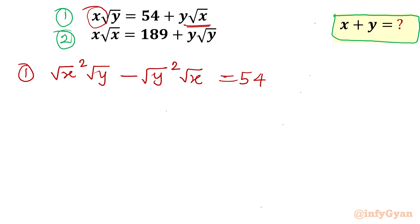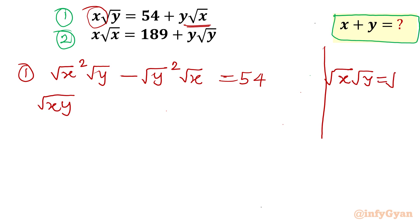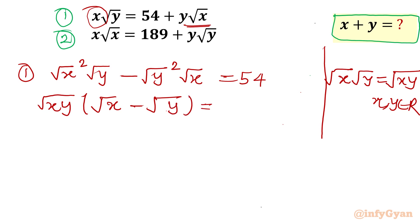Now you can see there are √x·√y and √y·√x terms. I will take √(xy) as a common factor, applying the property of radicals that √x · √y = √(xy) where xy belongs to the real numbers. So I can take √(xy) common, and what is left gives us: √(xy) · (√x − √y) = 54. This is equation 3.